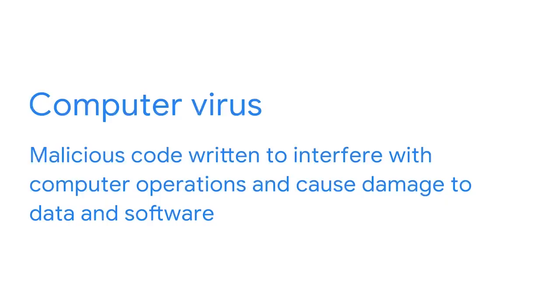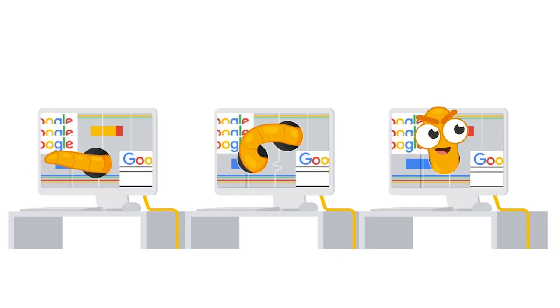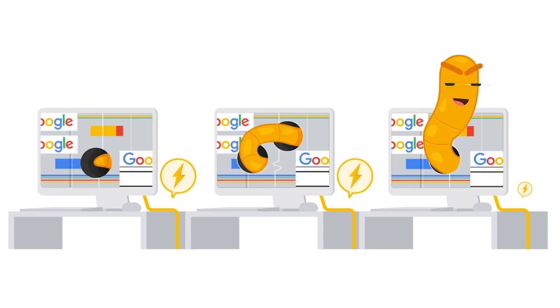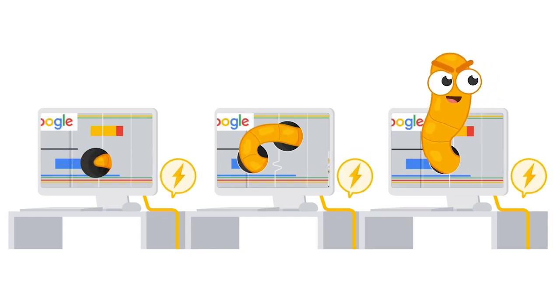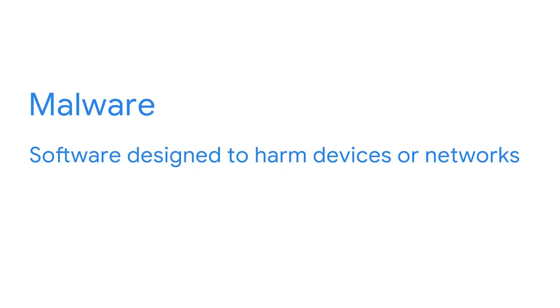Let's go over a couple of key terms that will support your understanding of the attacks we'll discuss. A computer virus is malicious code written to interfere with computer operations and cause damage to data and software. The virus attaches itself to programs or documents on a computer, then spreads and infects one or more computers in a network. A worm is a type of computer virus that can duplicate and spread on its own without human involvement. Today, viruses are more commonly referred to as malware, which is software designed to harm devices or networks.